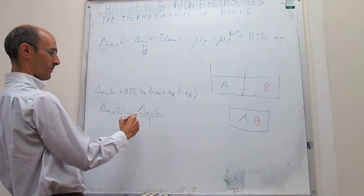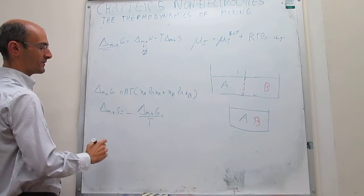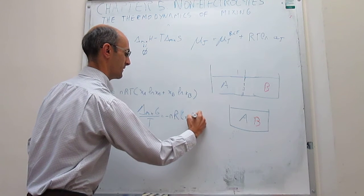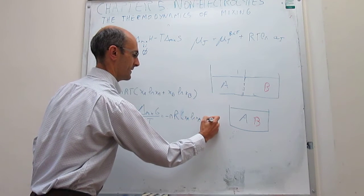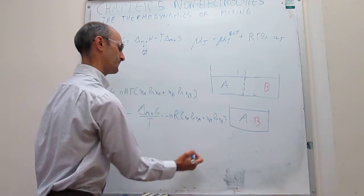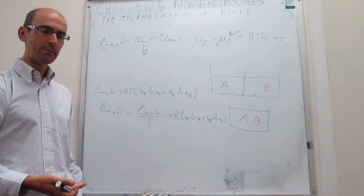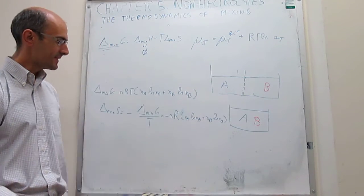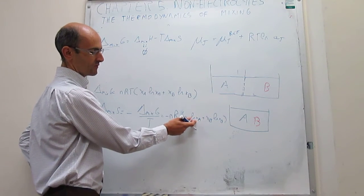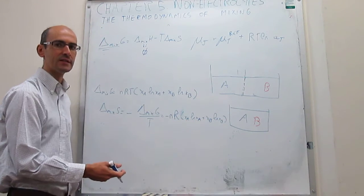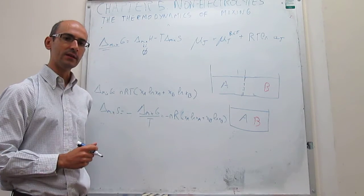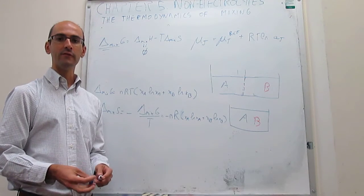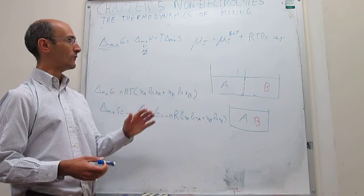With ΔH_mix = 0, we can solve for ΔS_mix = −ΔG_mix / T, which gives ΔS_mix = −NR (X_A ln(X_A) + X_B ln(X_B)). Since the parenthesis is always negative, the negative sign in front makes the entropy change always positive — the entropy of the system always increases upon mixing, as expected. This is a nice illustration of how the chemical potentials we spent several videos deriving become practically useful.